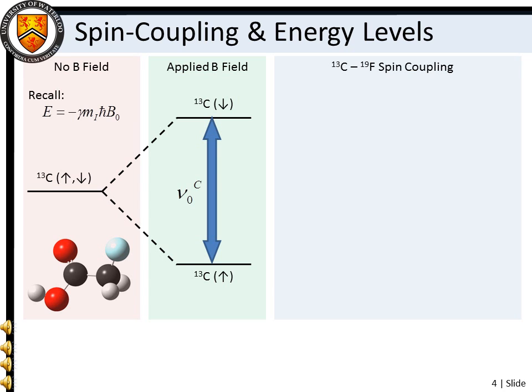Now consider the effect of an adjacent fluorine nuclear spin magnetic moment on the original spin-up carbon-13 atom. If the adjacent fluorine nuclear spin reinforces the applied field, the original spin-up state is further stabilized energetically. If on the other hand, the adjacent nuclear spin reduces the applied field, the original spin-up state is slightly destabilized.